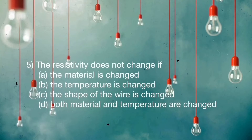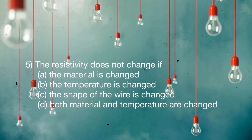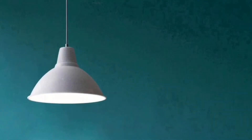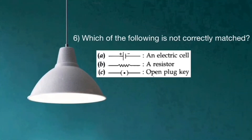Question number five: the resistivity does not change if — A: the material is changed, B: the temperature is changed, C: the shape of the wire is changed, D: both material and temperature are changed. Question number six: which of the following is not correctly matched?